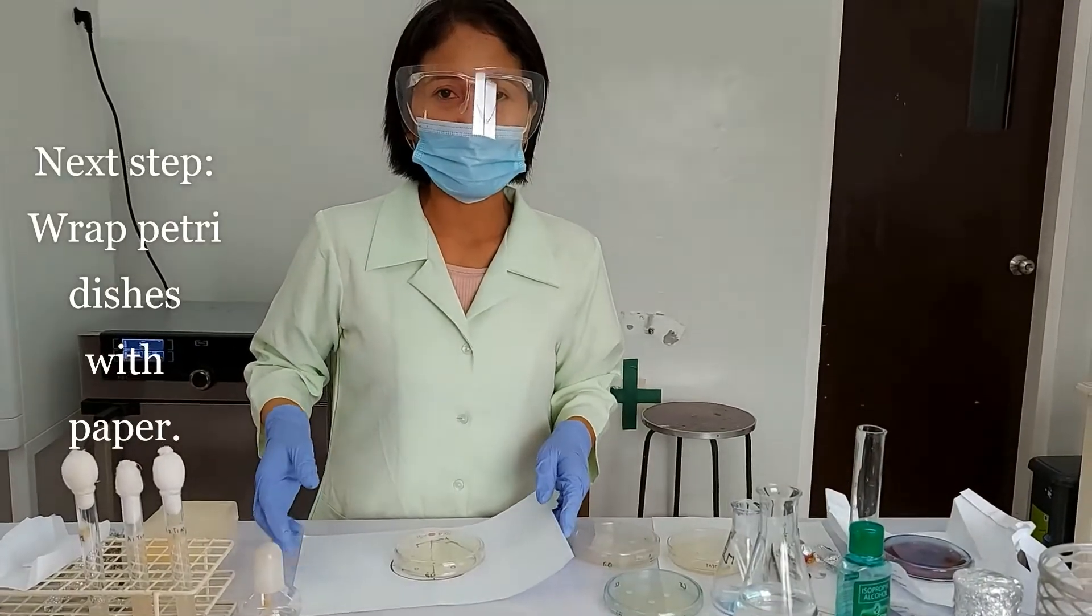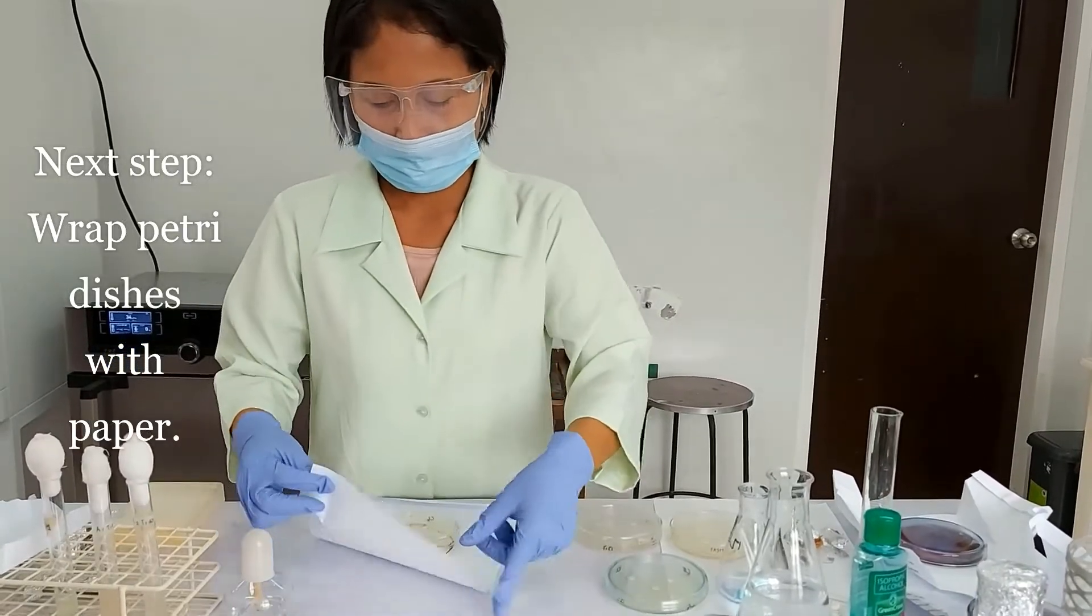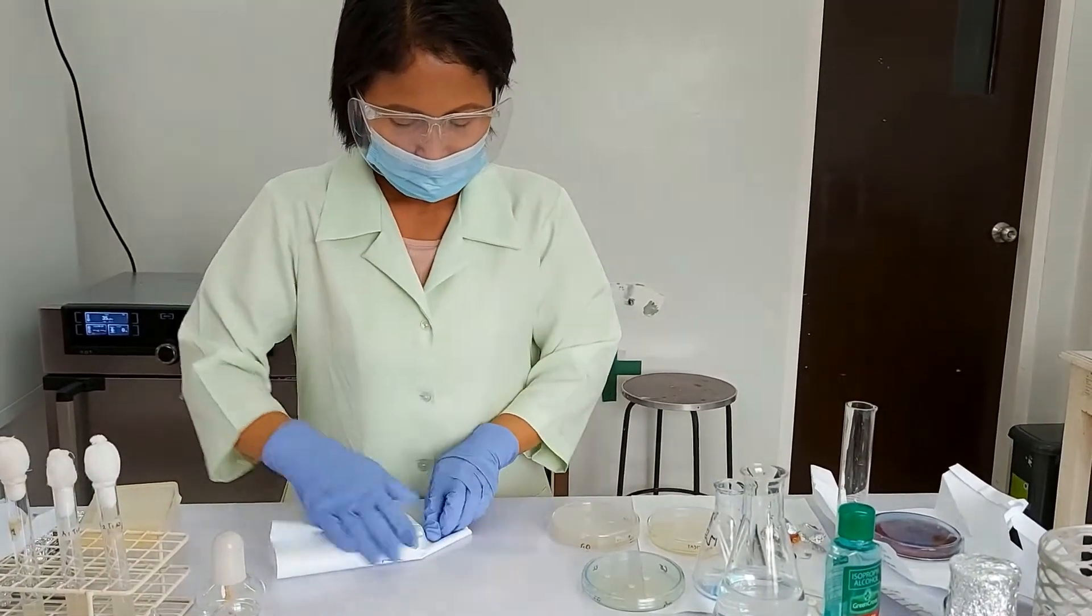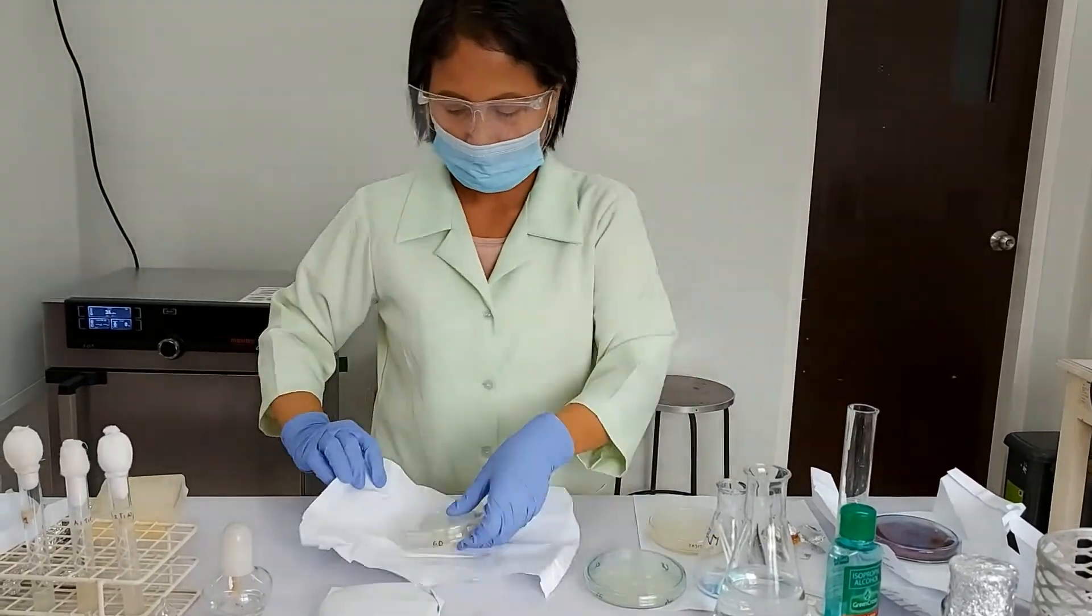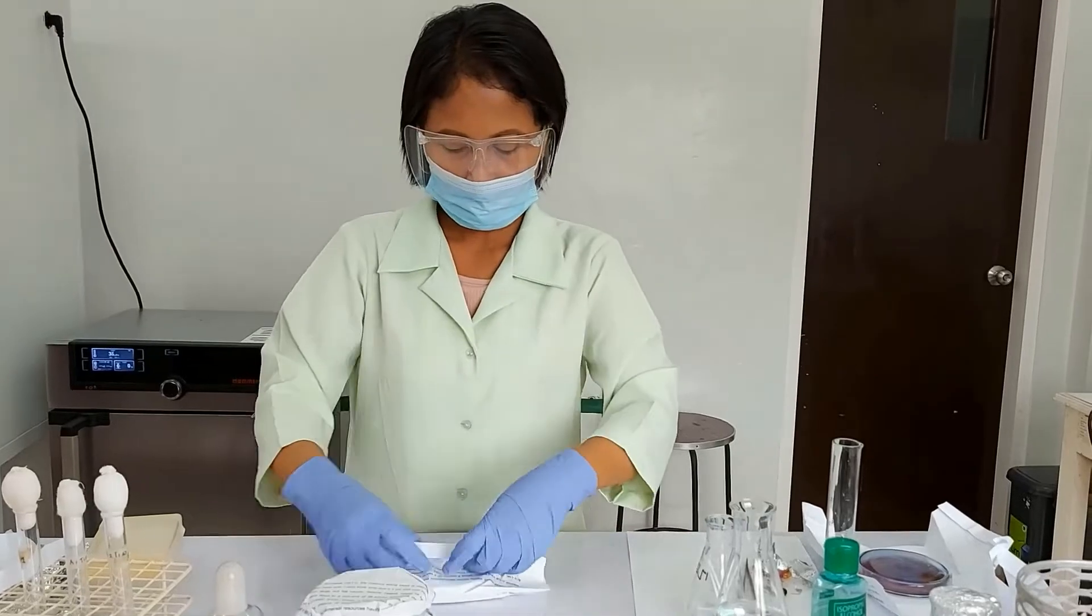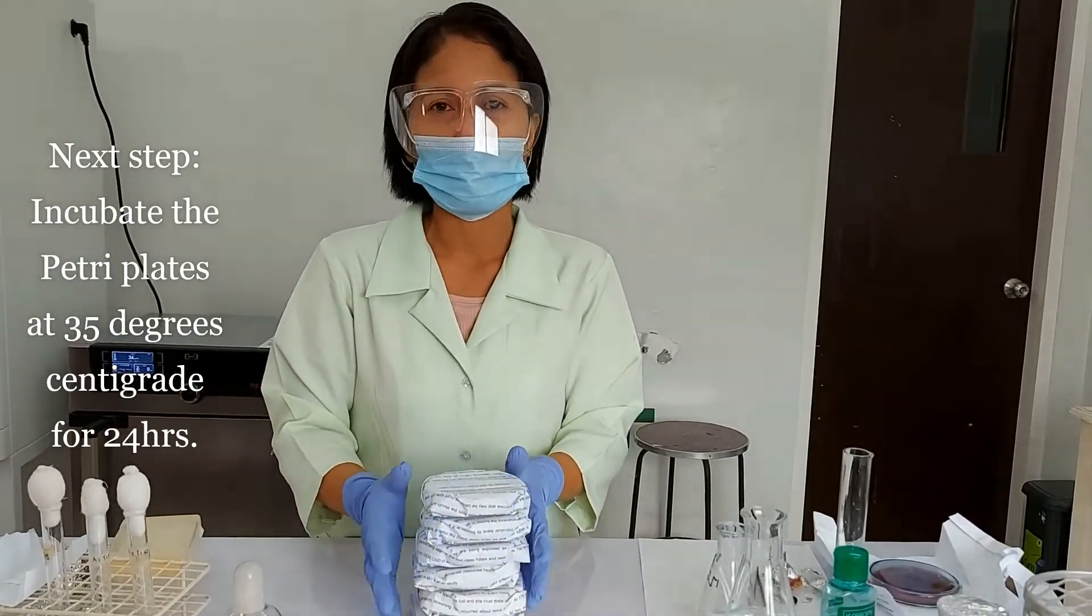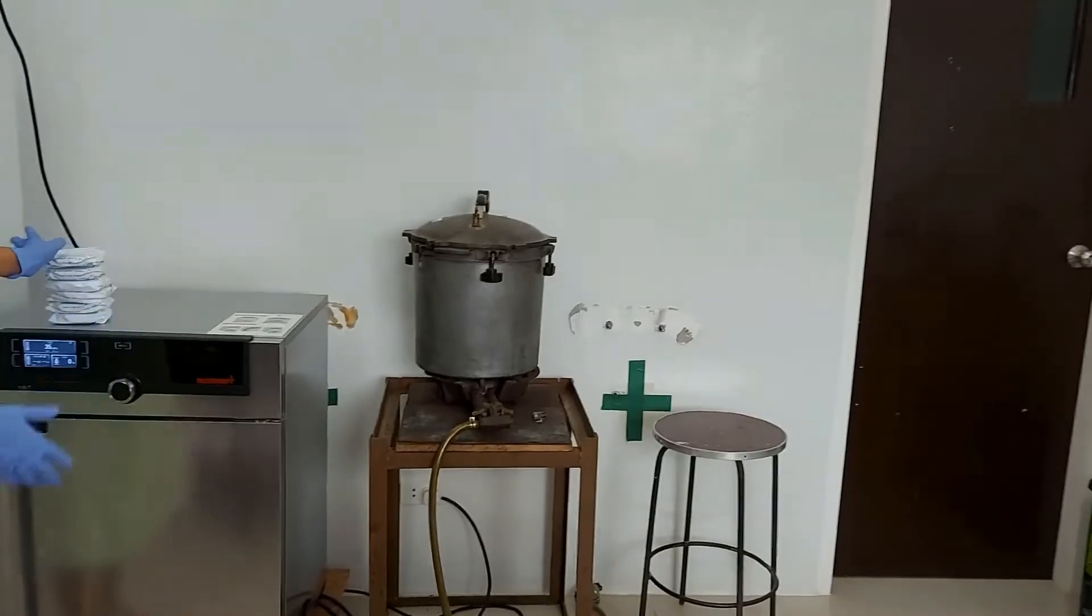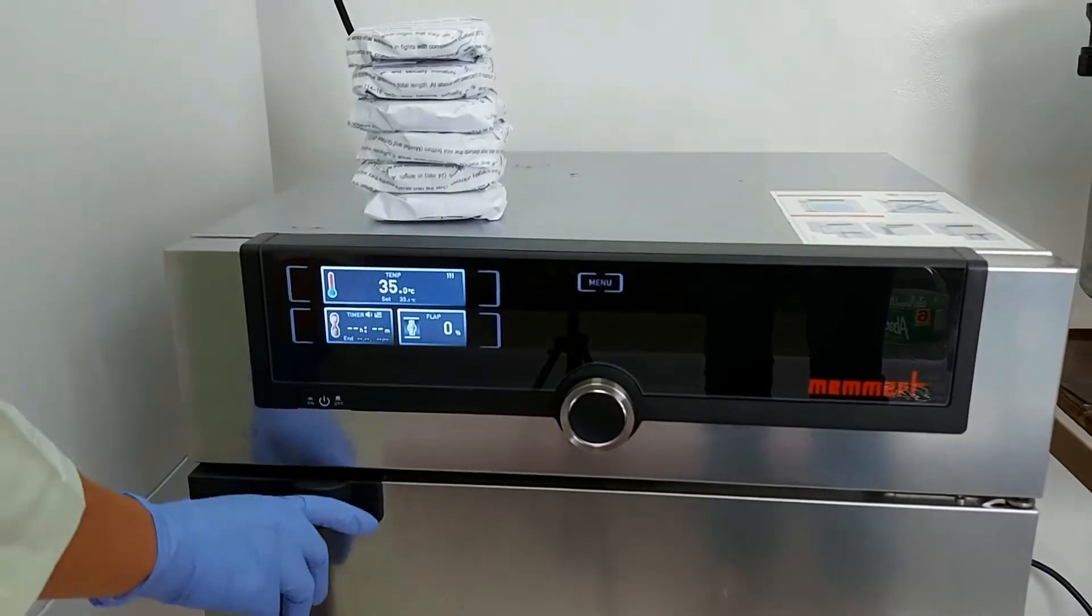The next thing that we are going to do is to wrap our petri dishes, wrap it with paper so we can incubate. Next is we are going to incubate this for 24 hours at 35 degrees centigrade. Our incubator is set at 35 degrees centigrade.